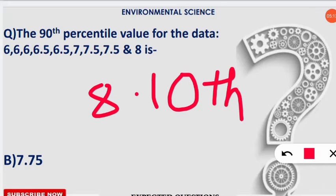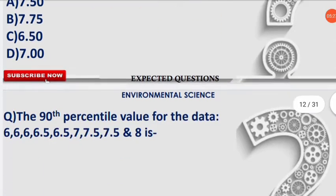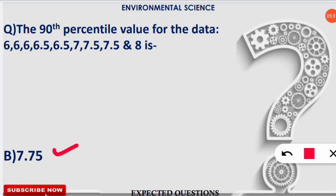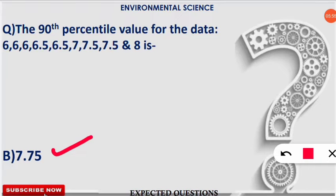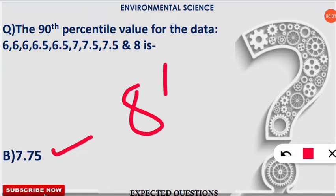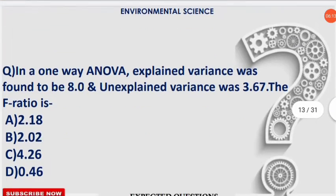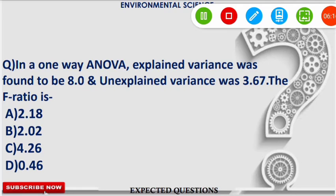The 8th term is 7.5. Since the position is 8.10 — slightly beyond the 8th term — the answer lies between 7.5 and 8. Looking at the options, 7.75 falls between 7.5 and 8, so the correct option is 7.75 as the 90th percentile value. Had the calculation given exactly 8, we would have selected the 8th term value of 7.5 directly.